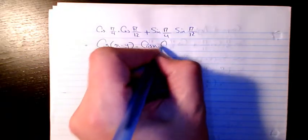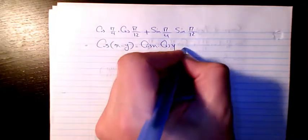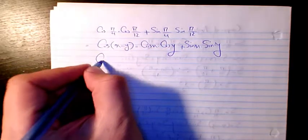So again, if you recall cosine x minus y, we learned that it will be equal to cosine x times cosine y plus sine x times sine y. We have exactly the same thing over there.